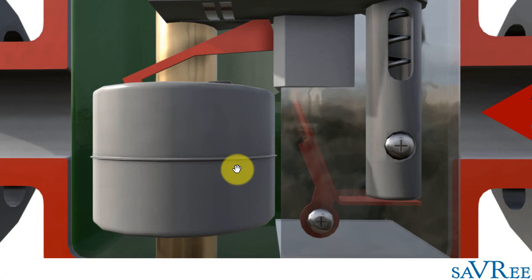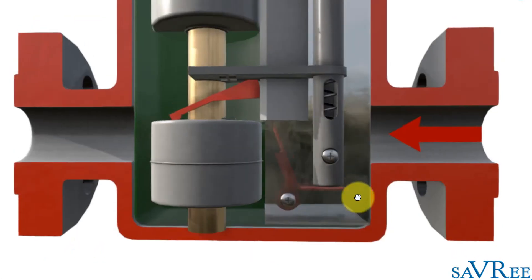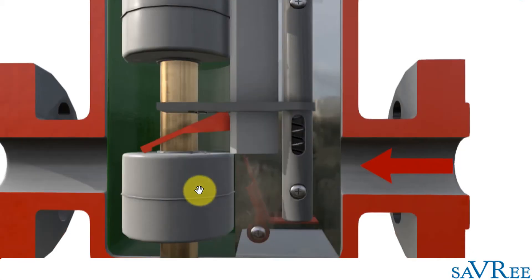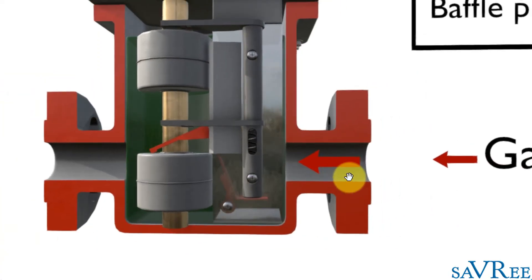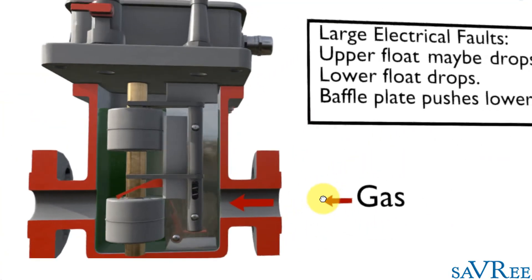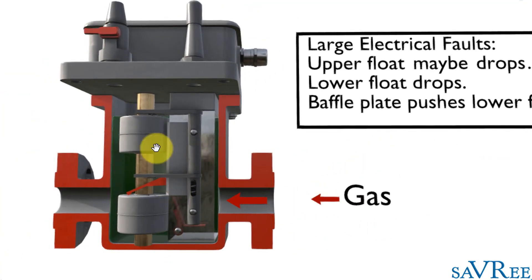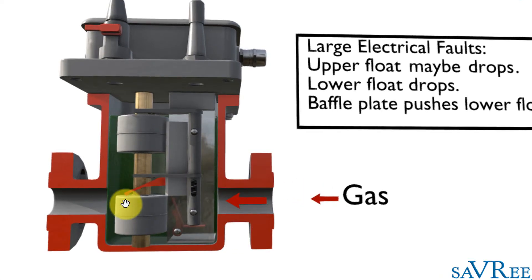Notice I said shut down. Obviously there's going to be an alarm as well, but we're going to shut down the transformer because if the upper float is up and it's just the lower float down and the baffle plate pushed the lower float down, those combinations tell us that that is a big fault and we need to shut the unit down.